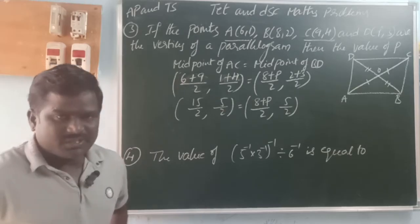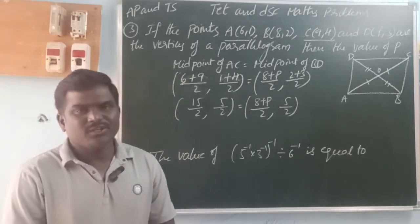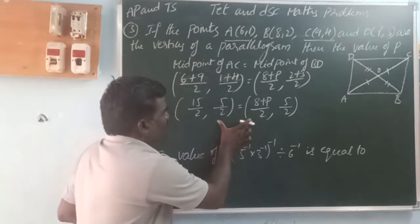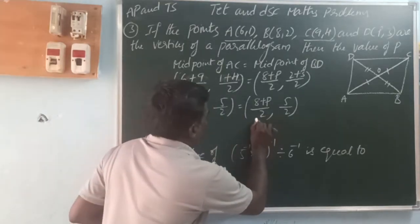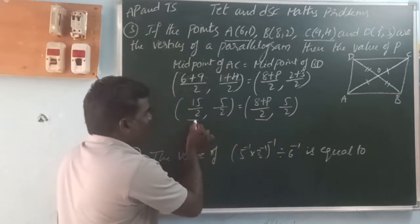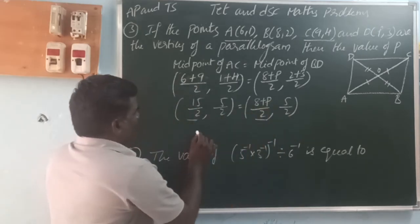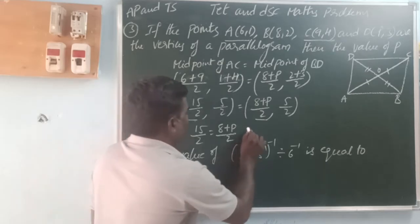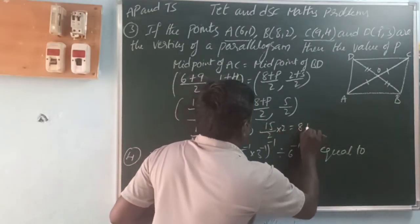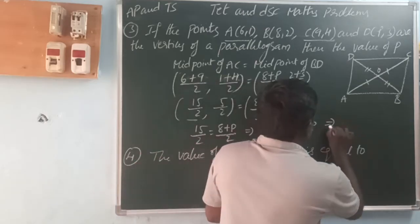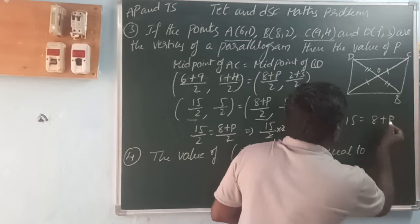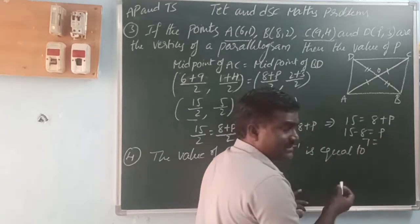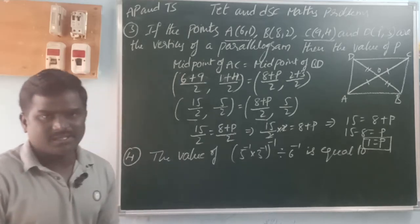Since the midpoints are equal, their coordinates are equal. So 15 by 2 equals (8 plus P) by 2. Multiplying both sides by 2, we get 15 equals 8 plus P. Therefore P equals 15 minus 8, which gives P equals 7.